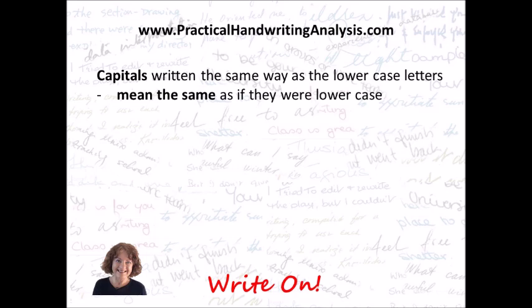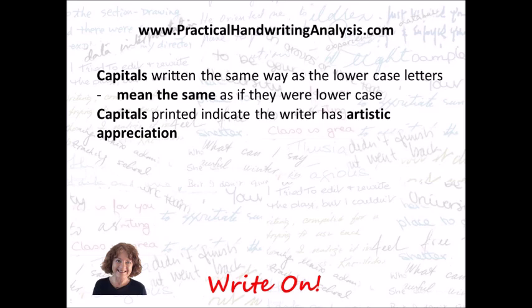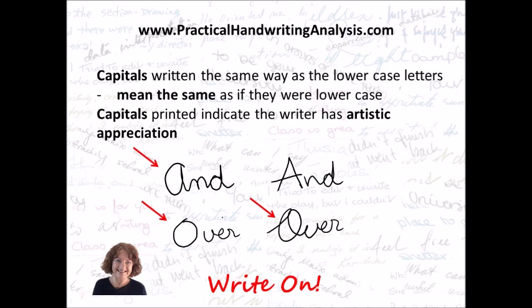Capitals written the same way as the lowercase letters mean the same as if they were lowercase. Capitals that are printed indicate that the writer has artistic appreciation. In the examples, three with red arrows are written the same way as lowercase — 'the,' 'and,' and 'over' show honesty. The second 'over' on the right shows intentional deceit, and the 'and' on the top right shows artistic appreciation.